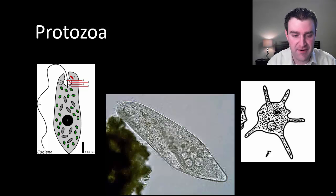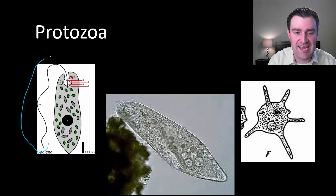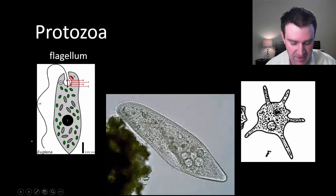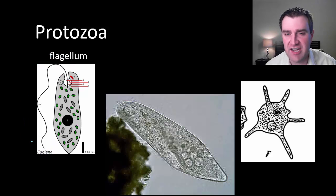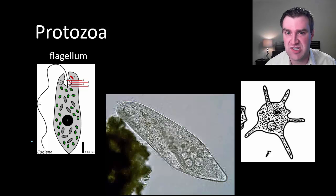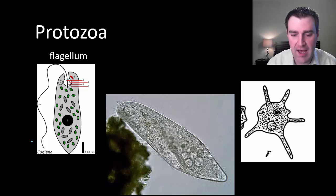Euglena have one very long, gigantic tail-like whip that moves them, and we call that a flagellum. Flagella are not unique to protists — even bacteria have flagella, and the sperm of any eukaryotic species would have a flagellum as well.